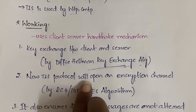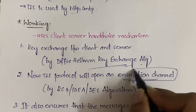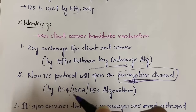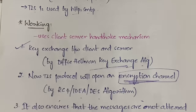In the second step, the TLS protocol opens an encryption channel to perform encryption of the data. When the server sends data to the client or vice versa, it will not send in plaintext — it encrypts the message into ciphertext so nobody can understand it. This encryption can be done using RC4, IDEA, DES, or AES algorithms, depending on the type of data.